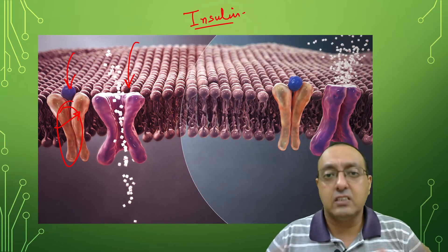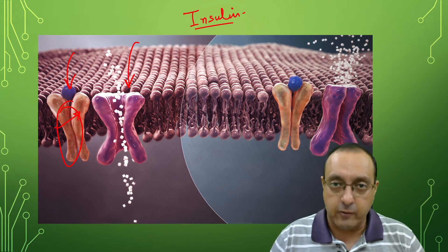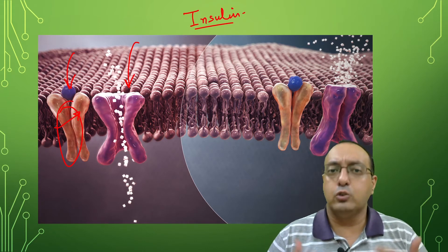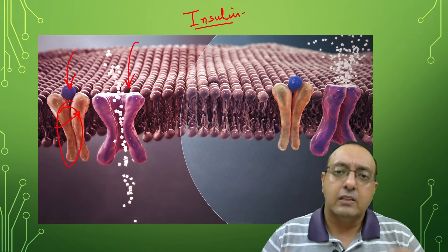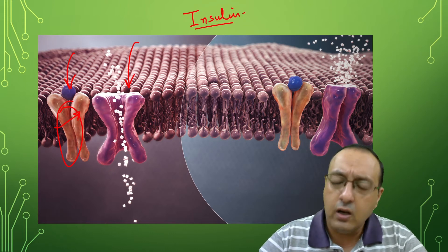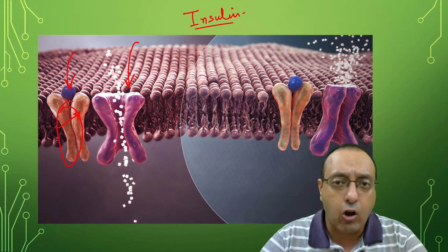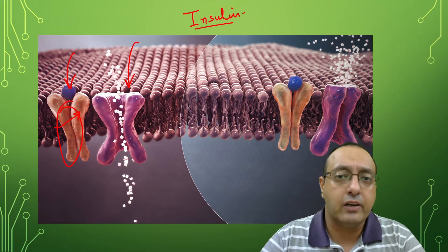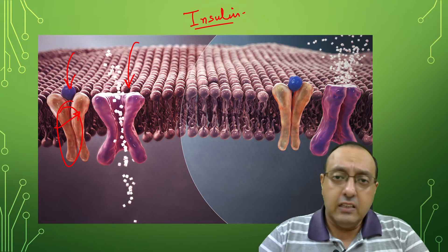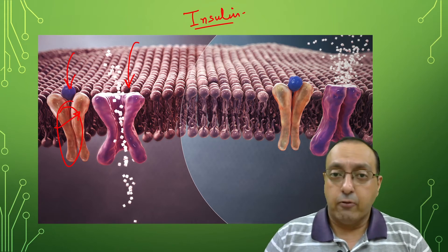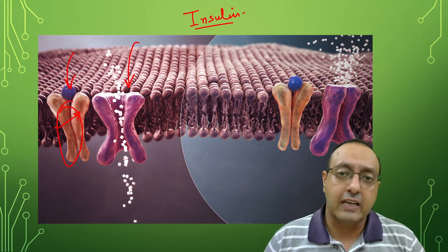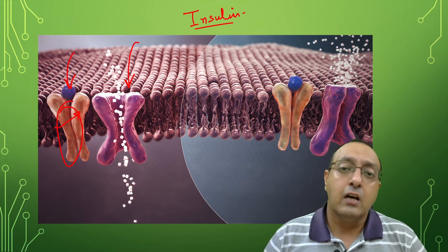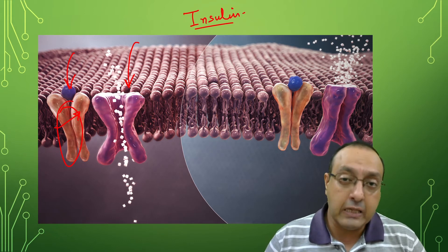In diabetes, this mechanism goes haywire — it gets destroyed. In type 1 diabetes, there is loss of beta cells of the pancreas due to autoimmune reasons. The exact cause of this autoimmune defect is not known, but beta cells are lost, resulting in reduced insulin production, and these people are dependent on insulin injections for life. Type 2 diabetes is the more common type, comprising almost 90% of all diabetes cases. By the way, diabetes is a global disease, affecting about 450 million people worldwide.